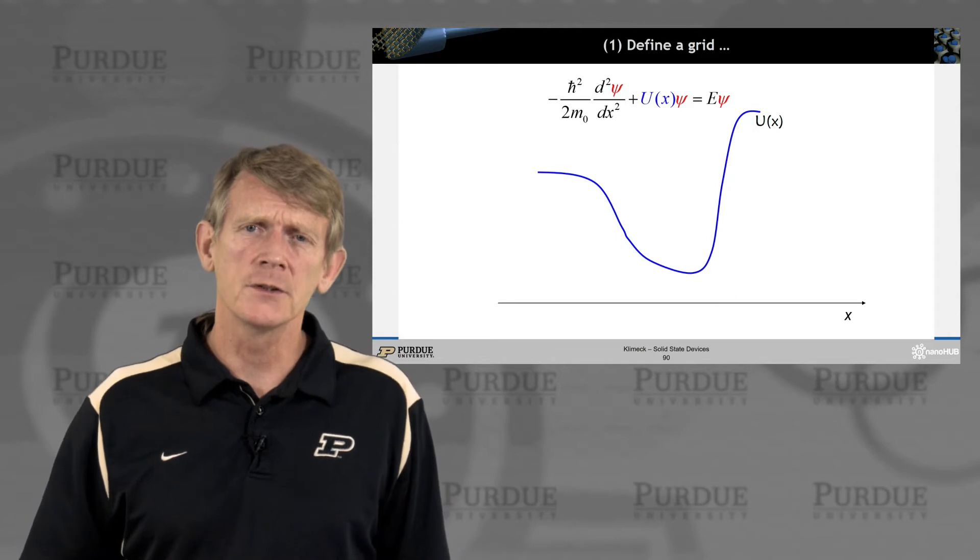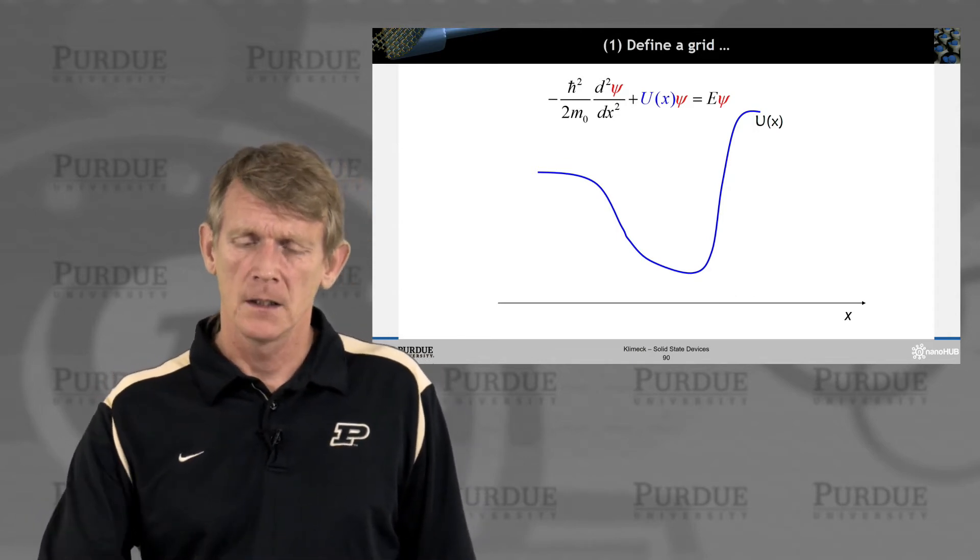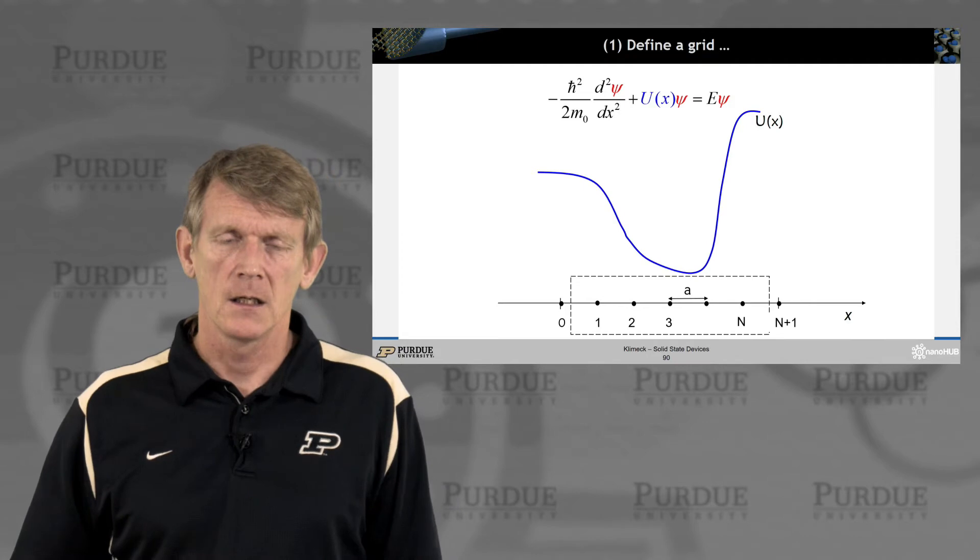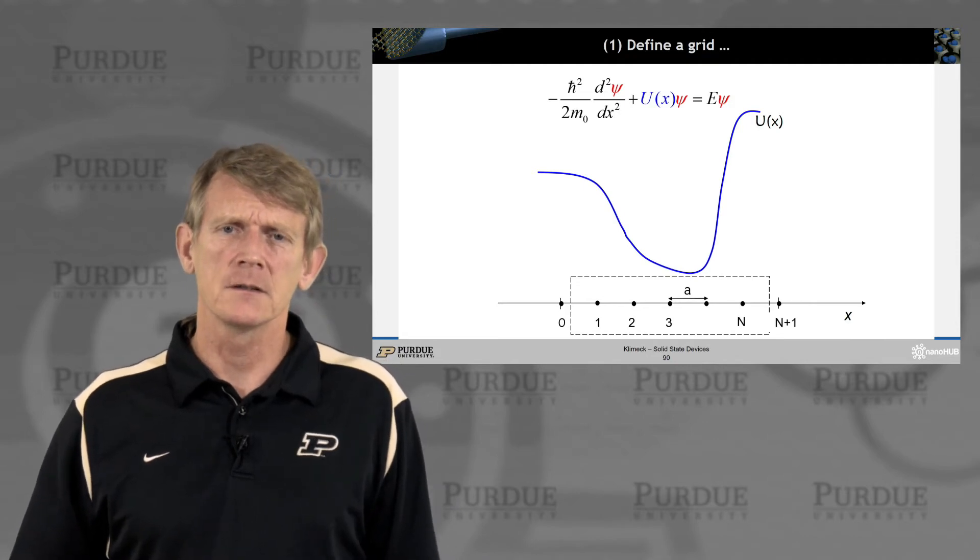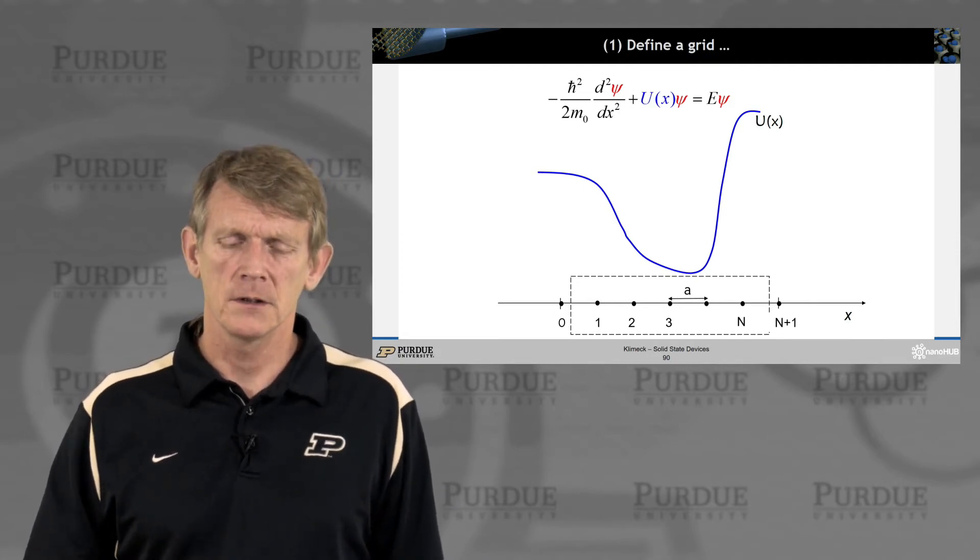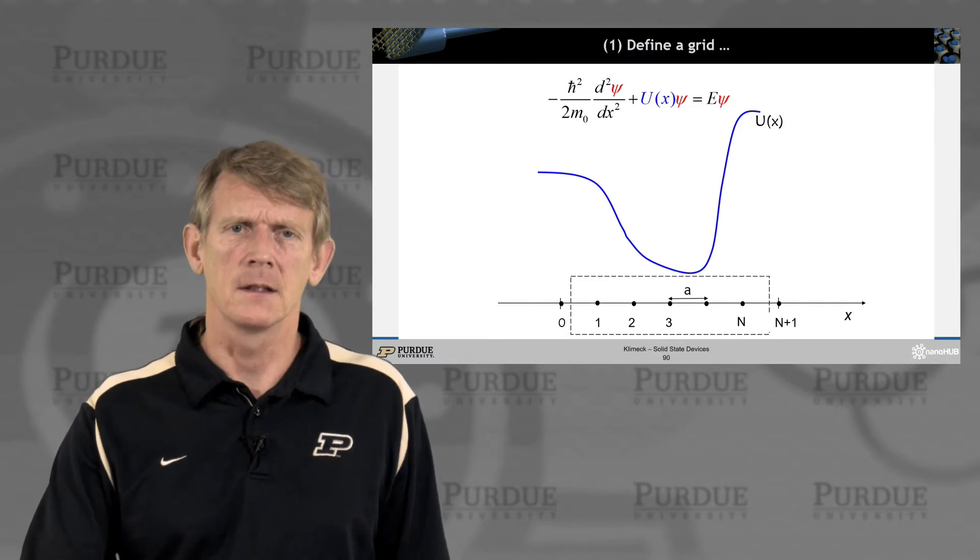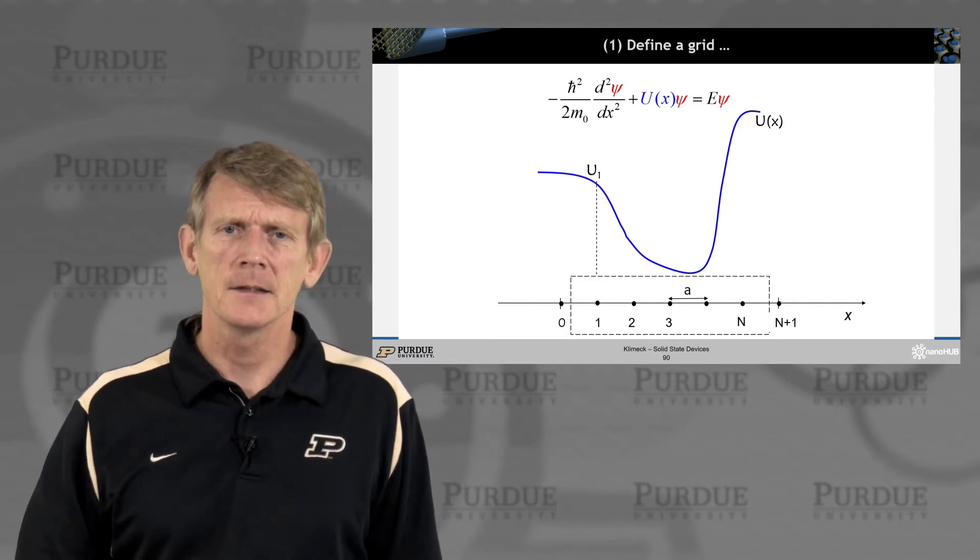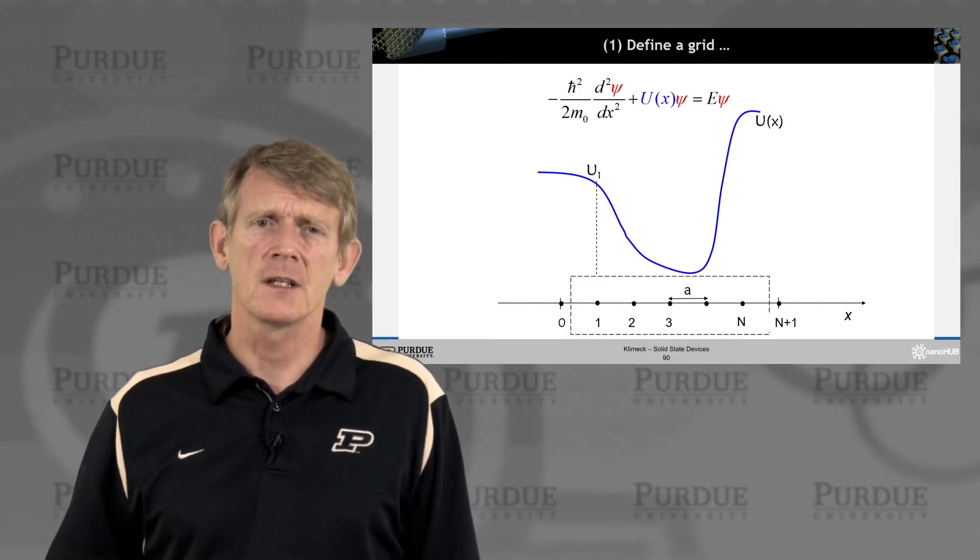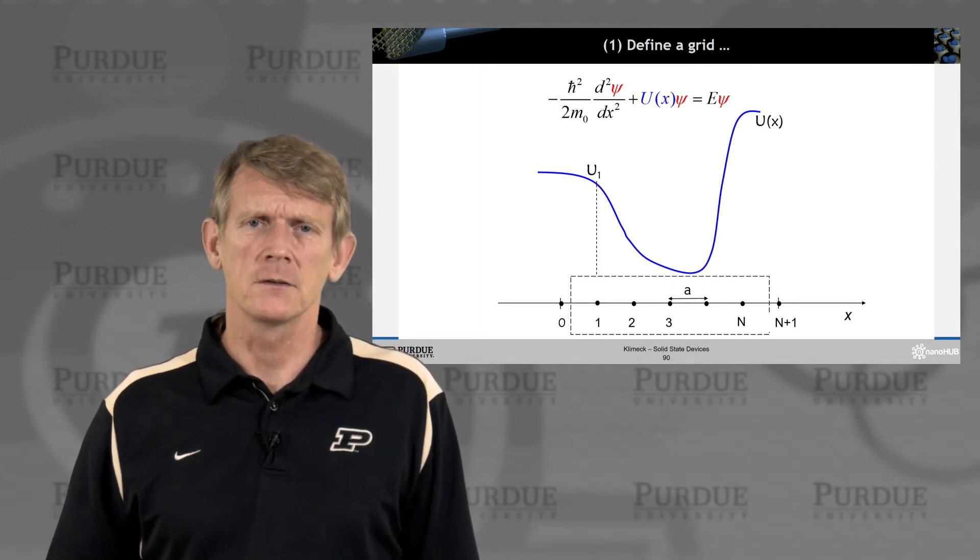So if you want to do that, you would define a grid in your space. You typically give it a constant lattice constant. Here we chose the length a. And you can discretize the potential that you would like to resolve.